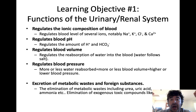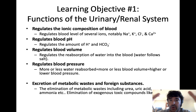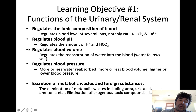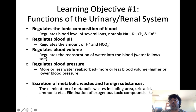The urinary system also regulates blood pH, either by getting rid of hydrogen and absorbing bicarbonate, or getting rid of bicarbonate and reabsorbing hydrogen. It regulates blood volume — the actual amount of blood you have. If you became dehydrated and your blood volume dropped, the urinary system would trigger reabsorption of water and reduce urinary output to bring blood volume back up. Blood volume is really important because it directly influences blood pressure — whatever happens to blood volume will happen to blood pressure. So the kidneys play a crucial role in regulating blood pressure through regulation of blood volume.